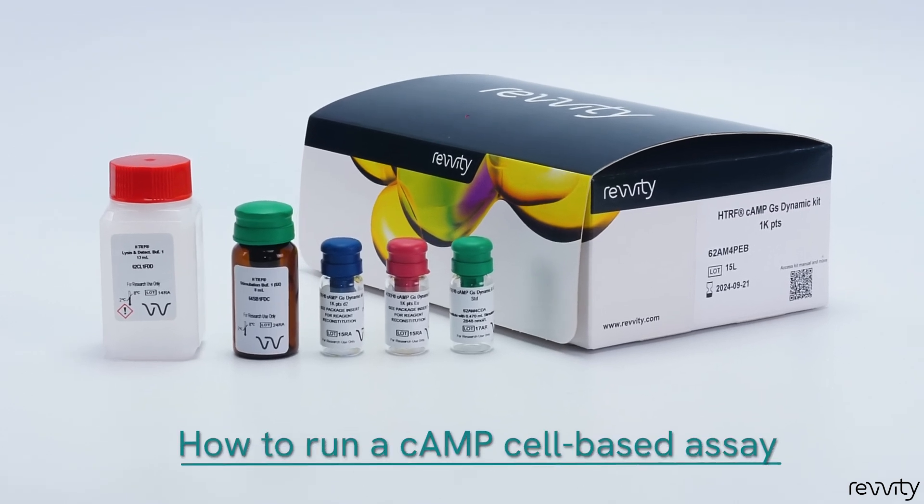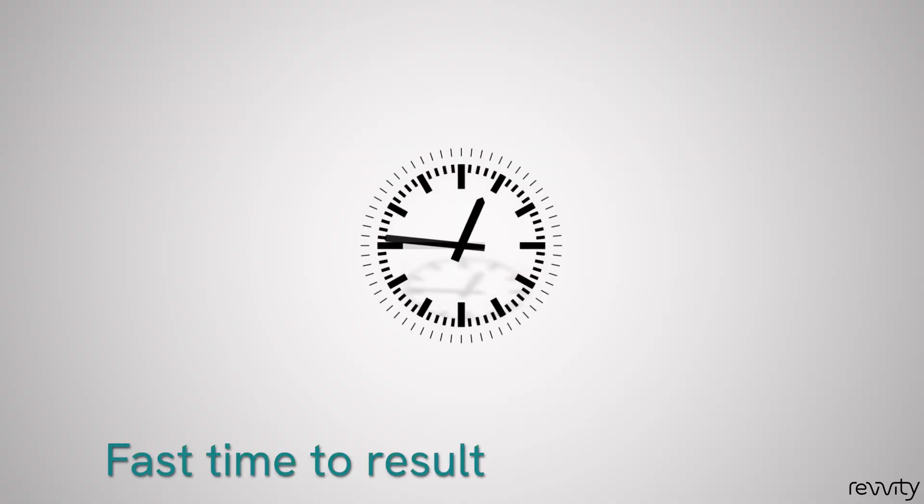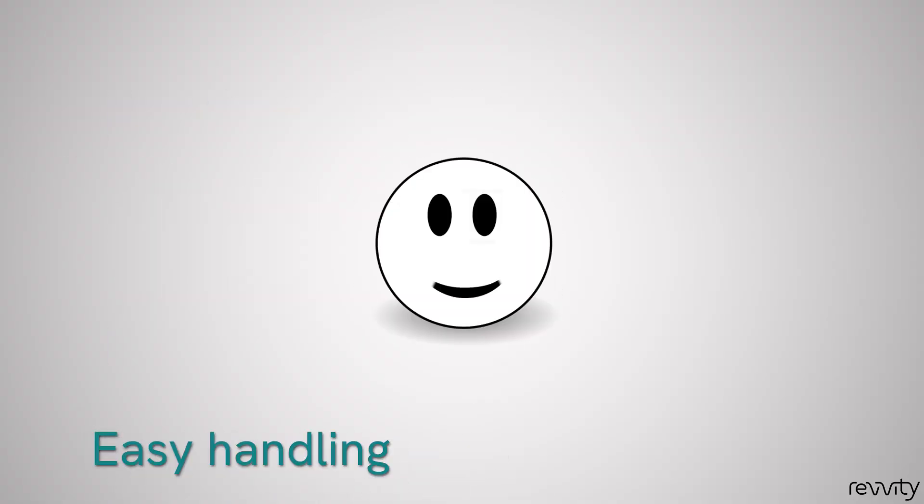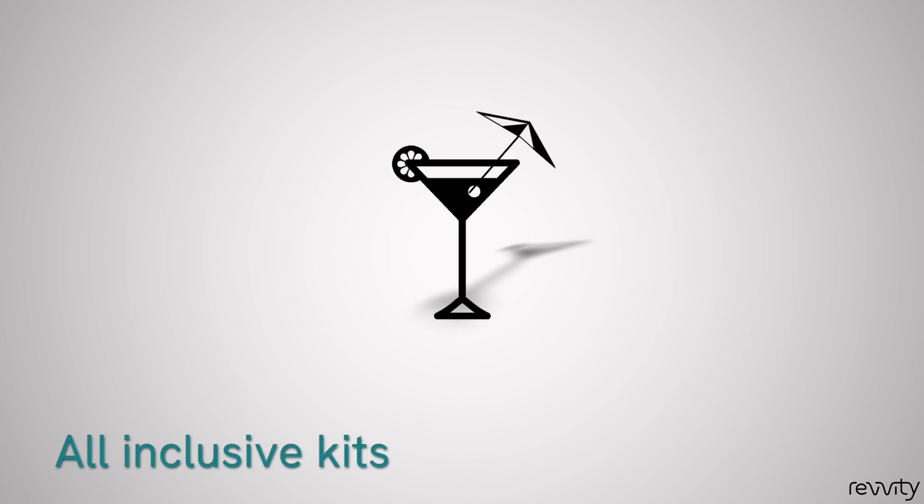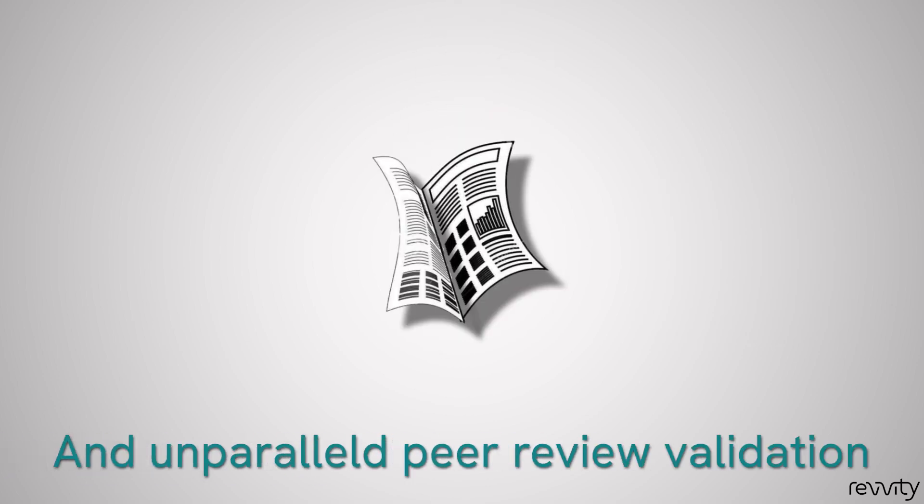This video describes how to run a cyclic AMP cell-based assay. This assay gives results in under two hours, is easy to use, everything you need is included, and it has been successfully published more than 1,500 times.